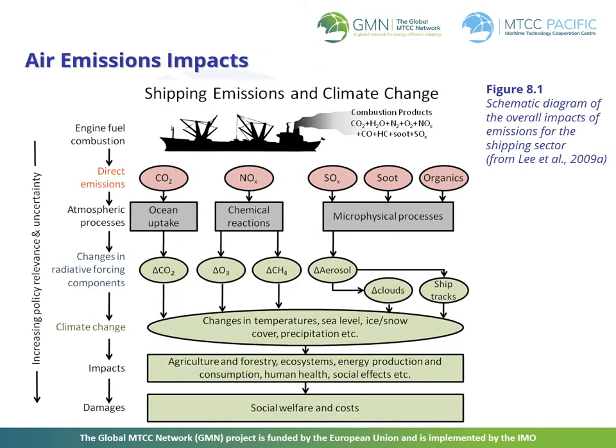Figure 8.1 is from the second IMO GHG study, 2009. Some of the emissions are absorbed by oceans and also convert partially to other chemicals and aerosols. Impacts and associated damages include: rise in temperature, changes in the sea level, ice, snow and rainfall, soil salinity and moisture content, and natural disasters. Technically, an aerosol is a colloid suspension of fine solid particles or liquid droplets in a gas — for example, air pollution such as smog and smoke.